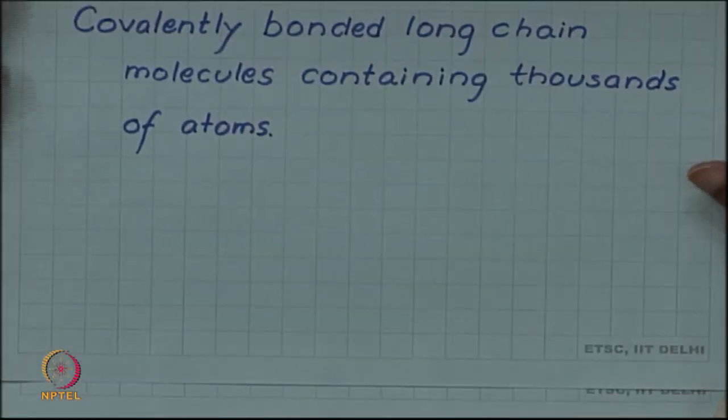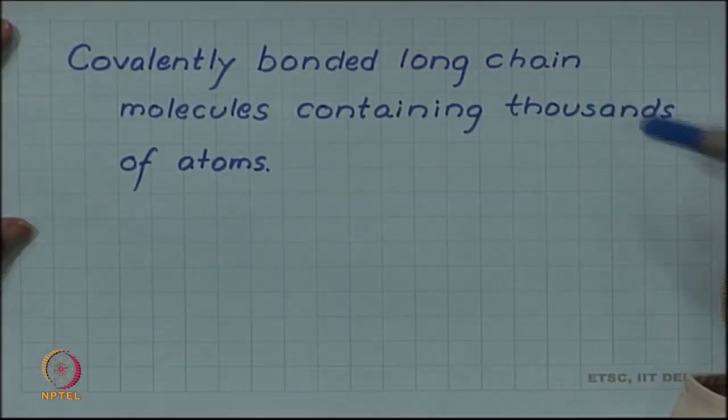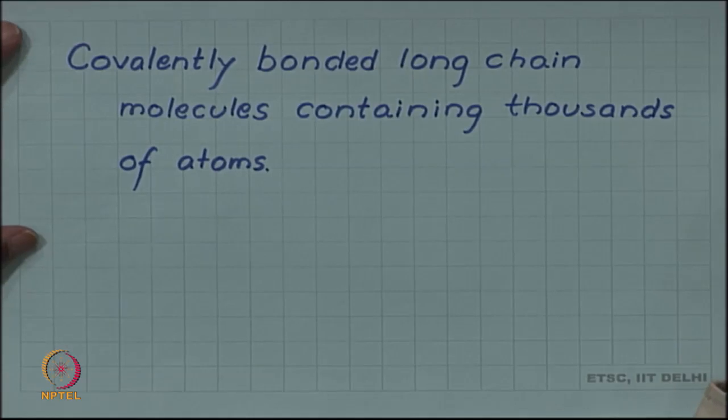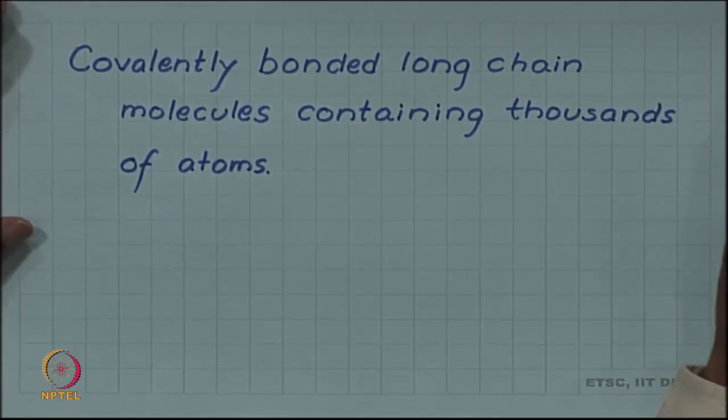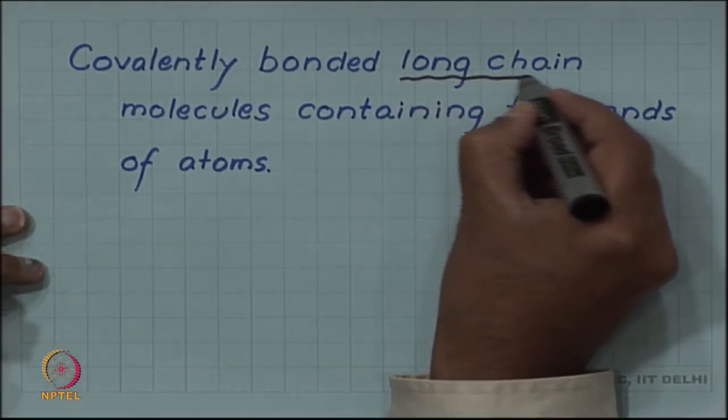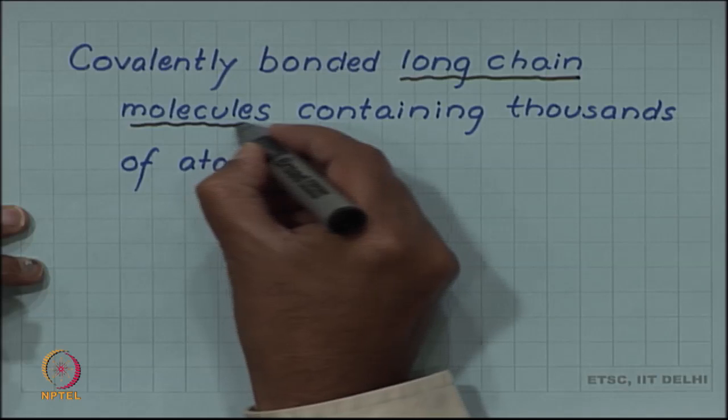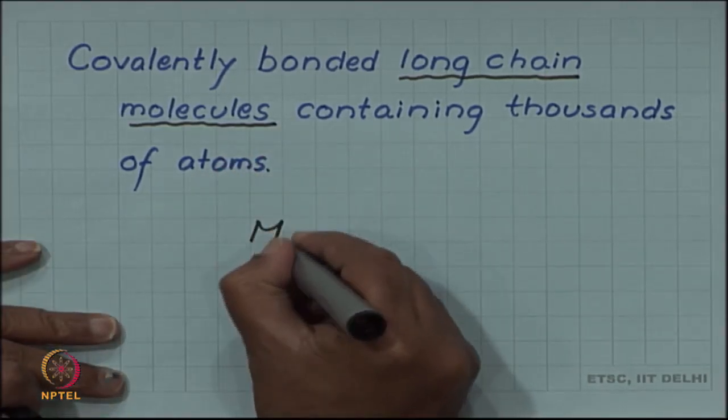The difference mainly comes from a very special structure which they have. They are covalently bonded long chain molecules. This is a particular speciality of polymers - they consist of long chain molecules. Sometimes, this is also called macromolecules.